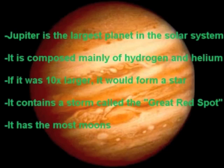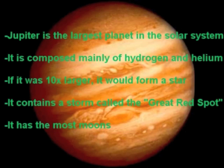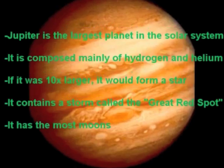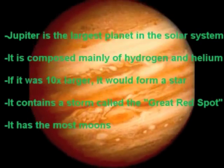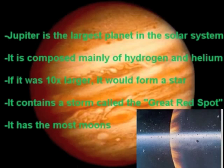Beyond the asteroid belt is Jupiter, the largest planet in the solar system. It is composed mainly of hydrogen and helium, and if it were just ten times larger, it would have formed a star. The surface of Jupiter contains bands of variously colored clouds parallel to Jupiter's equator. It contains a storm called the Great Red Spot in its atmosphere, and it is the size of three Earths. It never moves north or south. Jupiter has three very thin rings, as well as the most moons out of all the planets in the solar system.